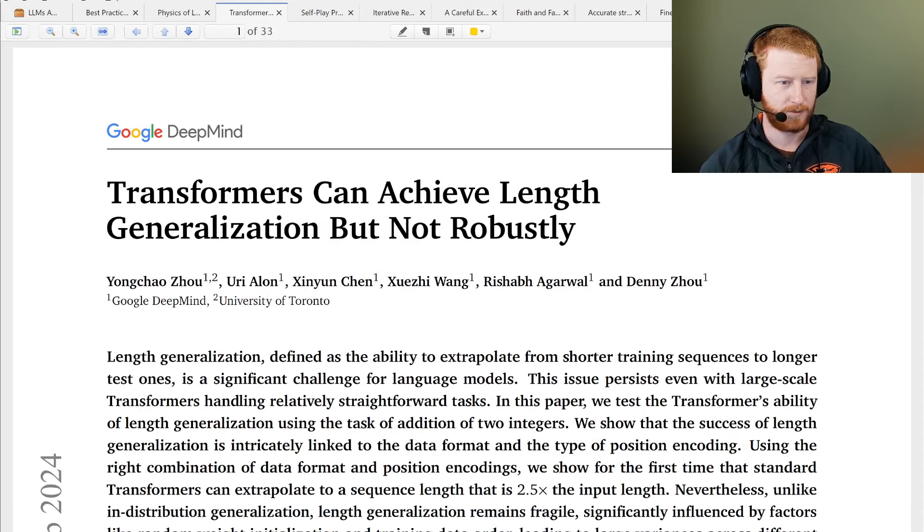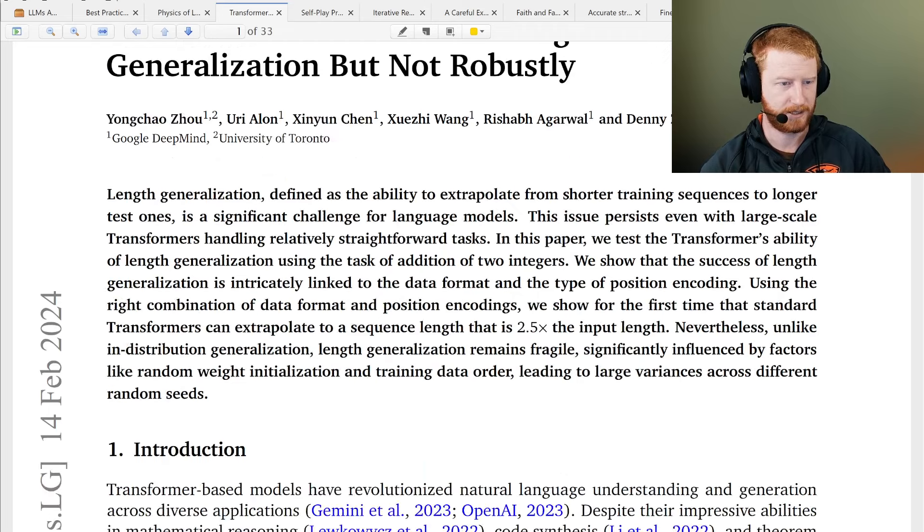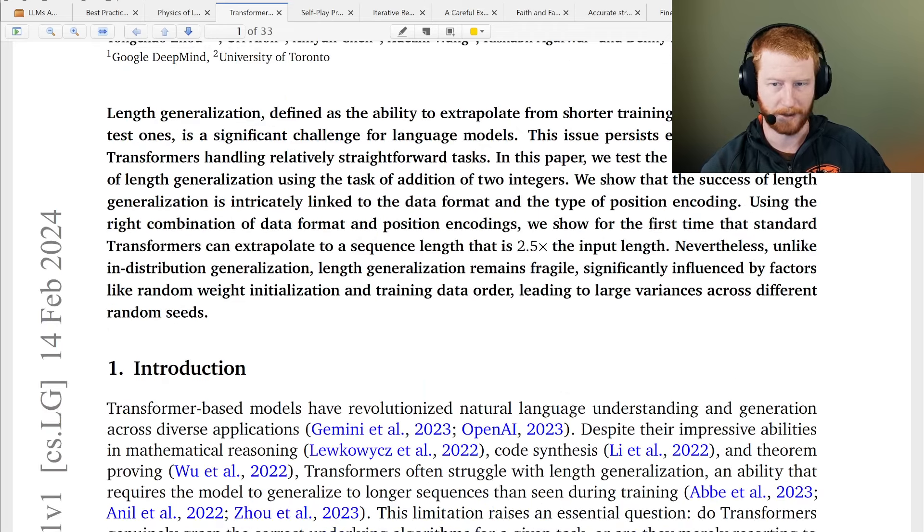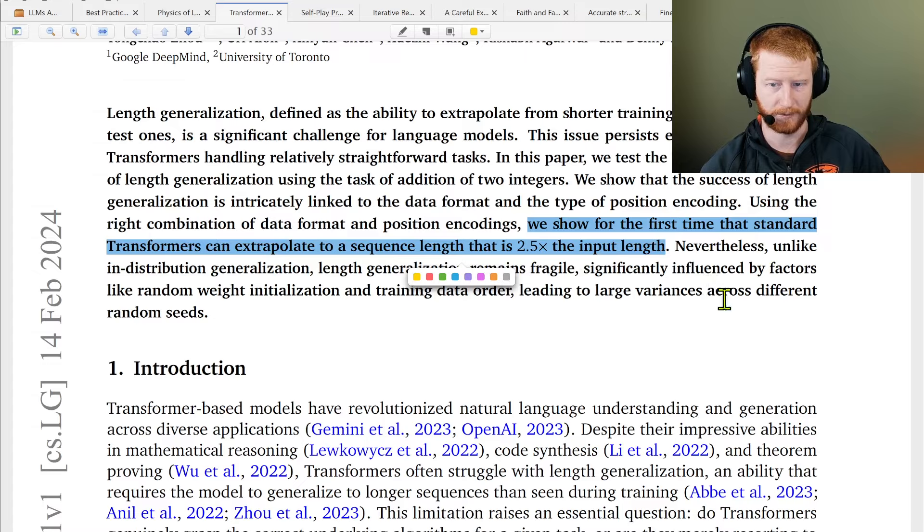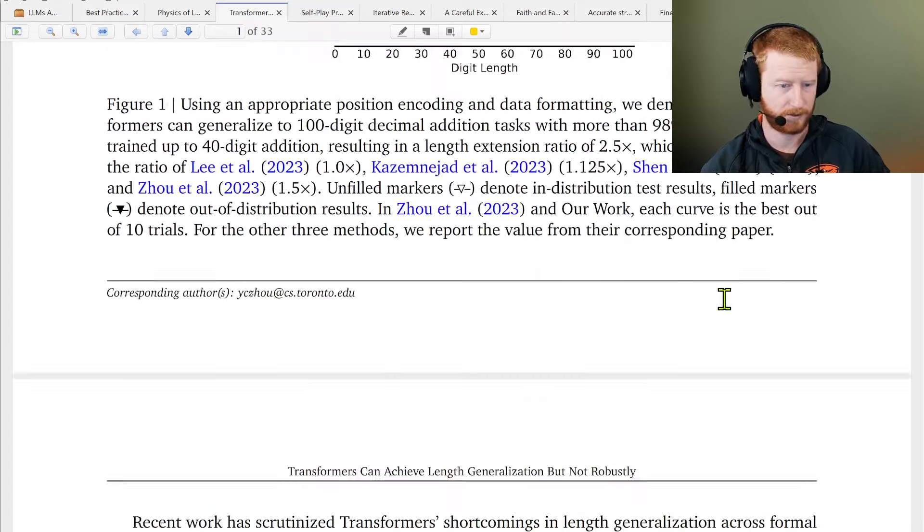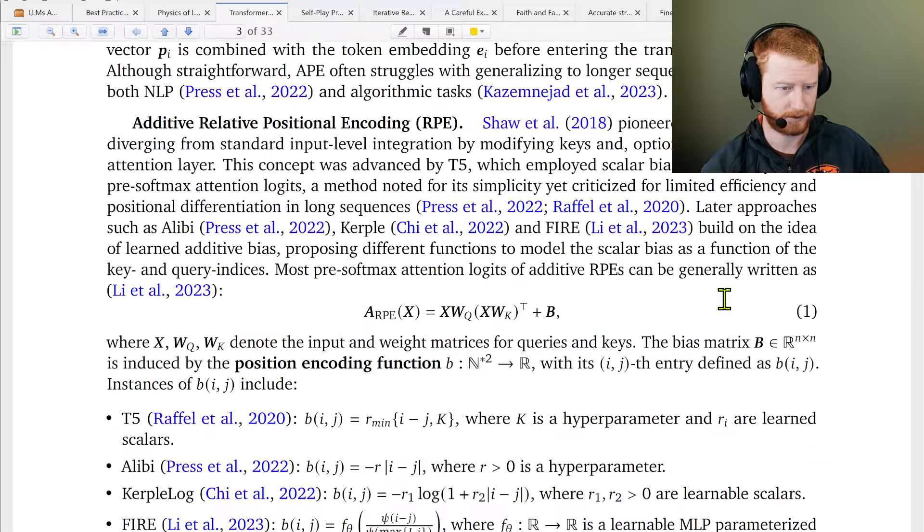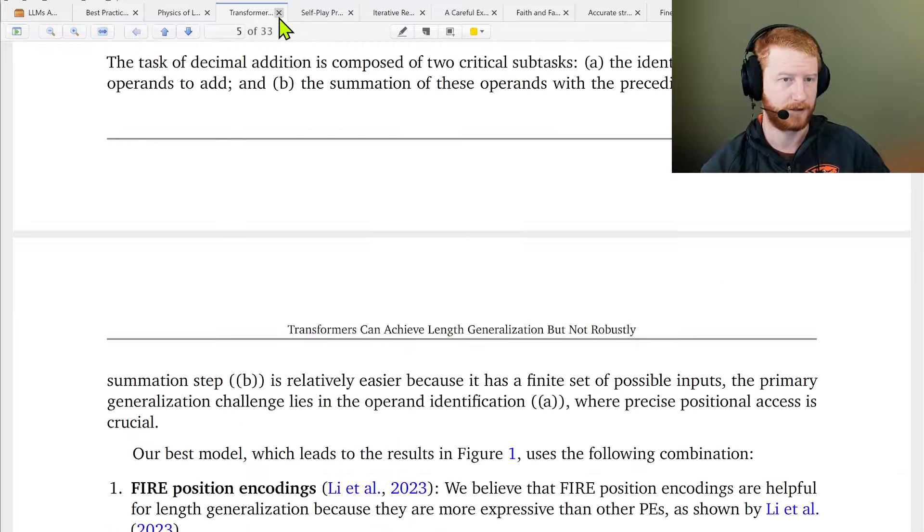Transformers can achieve length generalization but not robustly. Pretty cool, I guess. Can we extend and generalize to longer tasks, in particular addition? Previously people have tried to extend this and found that it's hit and miss. They say position encoding is key. We can finally extrapolate longer than the input length. Seems interesting. I have not perused this yet. I confess I probably won't.